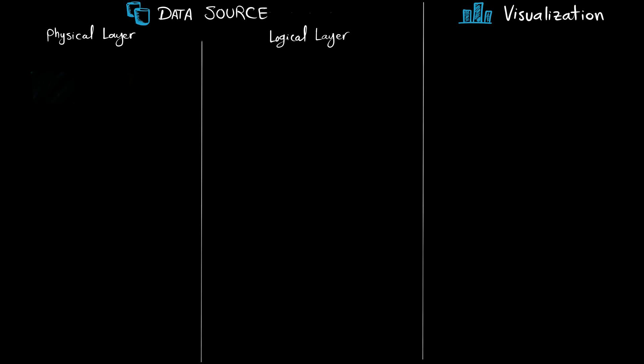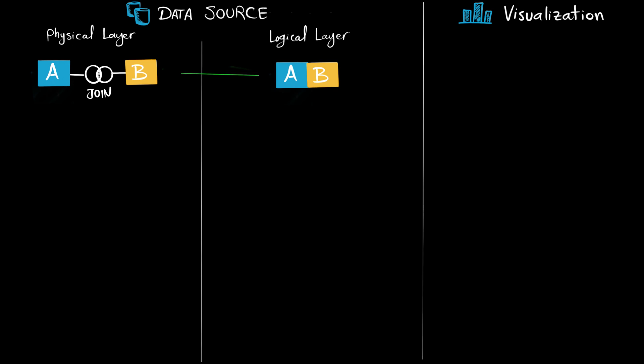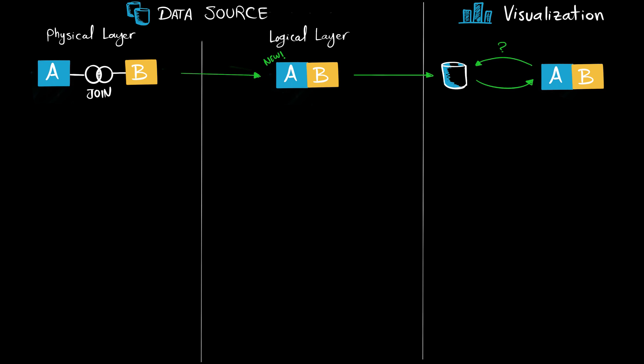Let's start with joins: they connect two tables at the physical layer and create a completely new logical table in the logical layer, combining the fields of both tables. At the visualization layer, Tableau sends a query to the data source, and the data source retrieves data from that logical table.